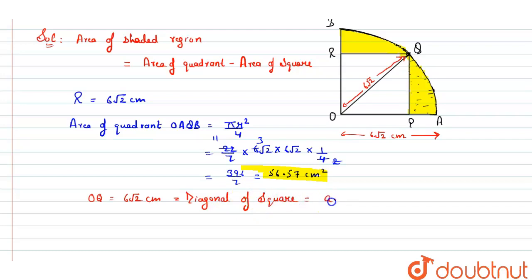As we know, length of diagonal of square equals a√2. That means 6√2 equals a√2, which implies a equals 6. Side of square equals 6 centimeter.